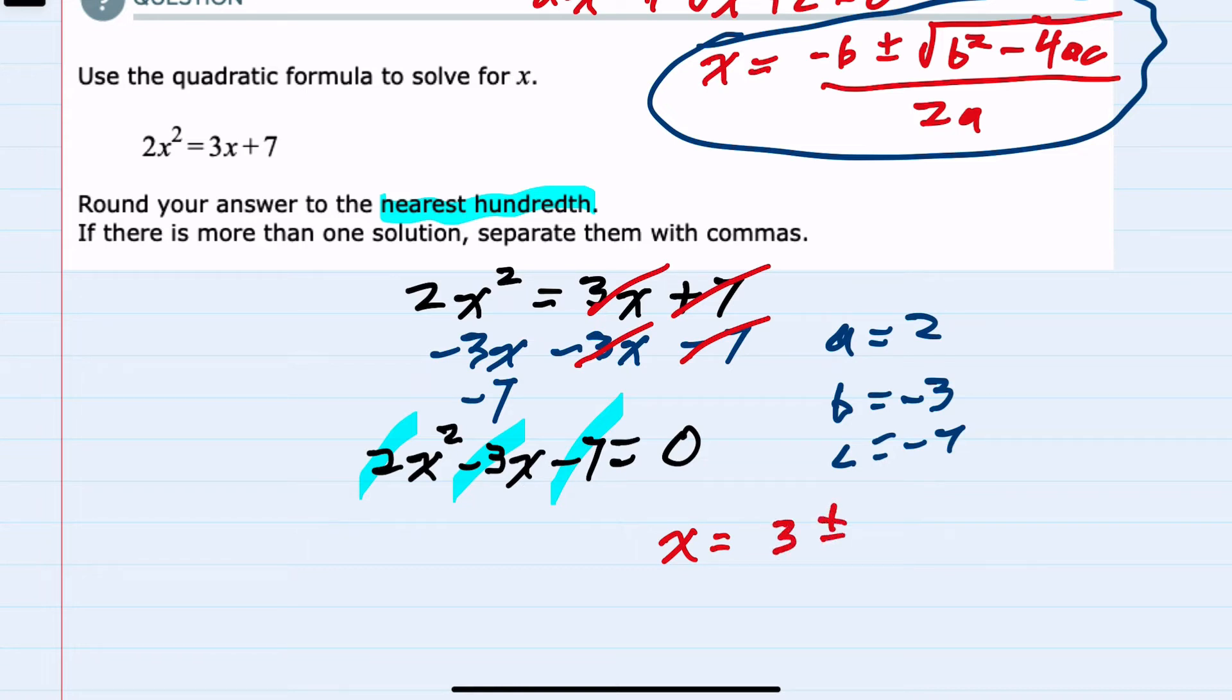plus or minus the square root of b², which is negative 3, so b² would be a positive 9, minus 4 times a, which is 2, times c, which is negative 7,